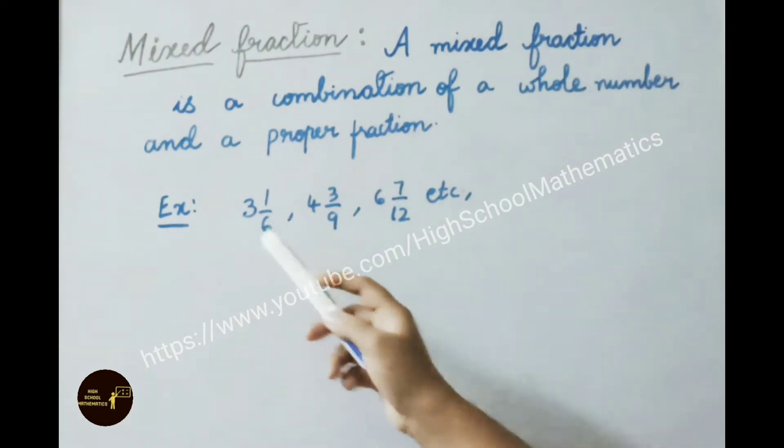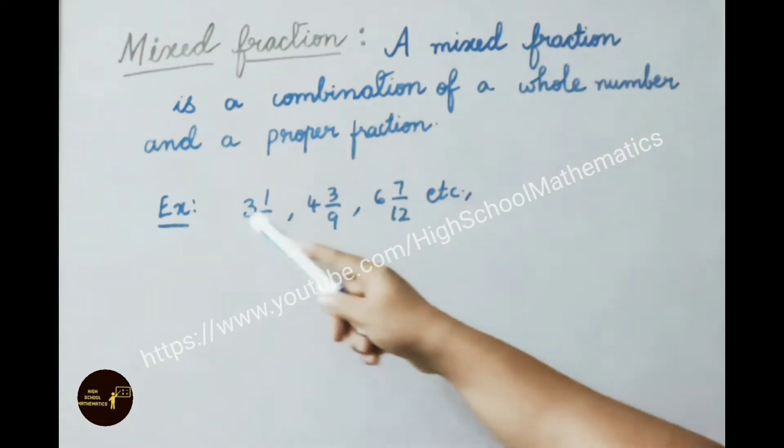See here 3, 4, 6 these are whole numbers. 1 by 6, 3 by 9 and 7 by 12 are proper fractions, where numerator is less than the denominator. So mixed fraction is a combination of both a whole number and a proper fraction.